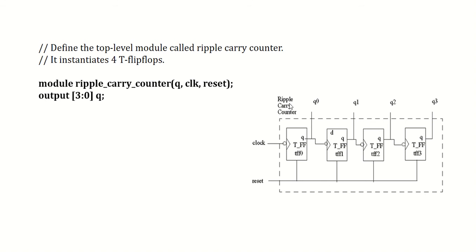Q is the output and it is a 4-bit vector because we need Q0, Q1, Q2, Q3, so I am representing it as a vector from 3 down to 0. Q3 is the MSB and Q0 is the LSB. The two inputs are clock and reset, declared as input clock, reset. Now I need to write the logic for how the ripple carry counter is going to work using a sub-module T flip-flop.